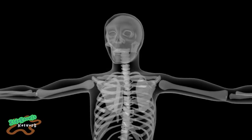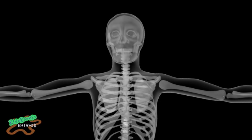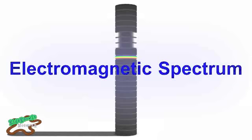What is an x-ray? You may have broken a bone at some point and had an x-ray picture taken. X-rays are a form of electromagnetic radiation. If we look at a chart of the electromagnetic spectrum, we see that this portion is visible light.